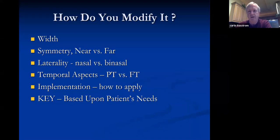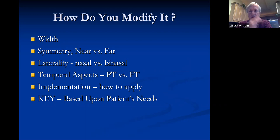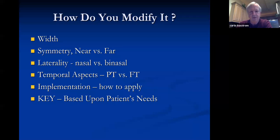How do we modify it? The width can be very narrow or wider. It can be symmetrical or asymmetric, with one side more and one less. You may use binasal occlusions for near reading or just far. You can also have just a nasal sector where only one side is occluded. These can be prescribed part-time or full-time. The key take-home message is: what are your patient's needs, and how can you help them change their visual performance to meet those needs?